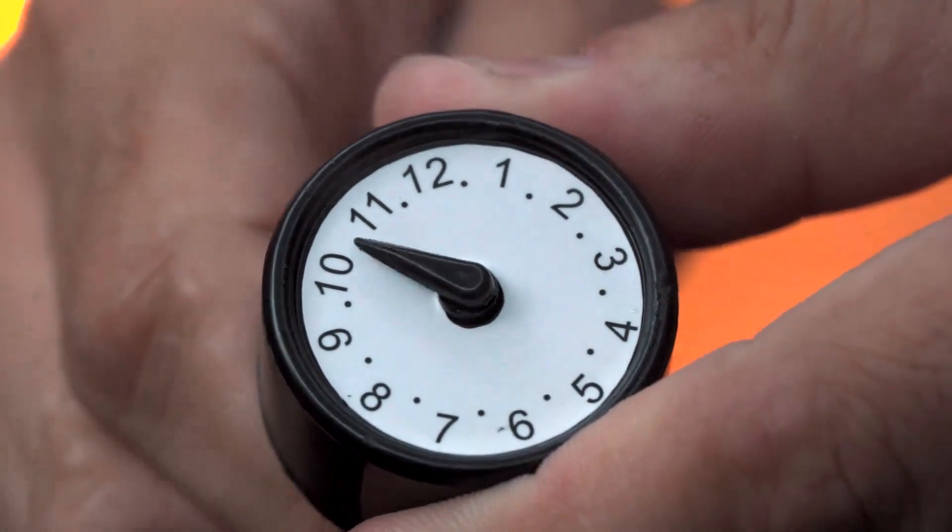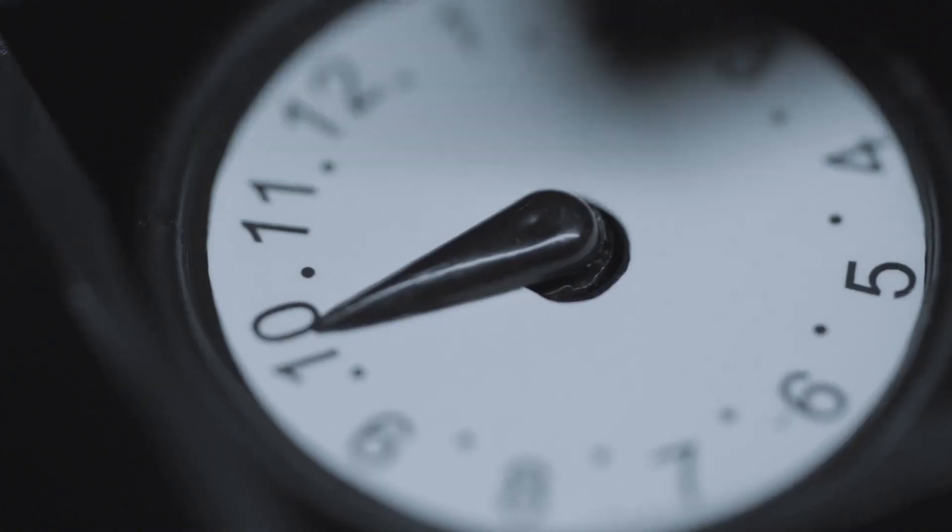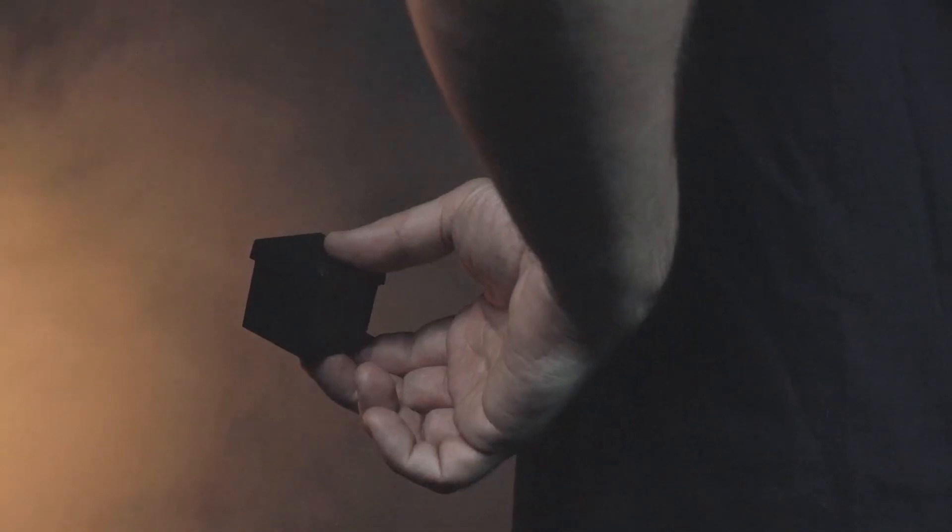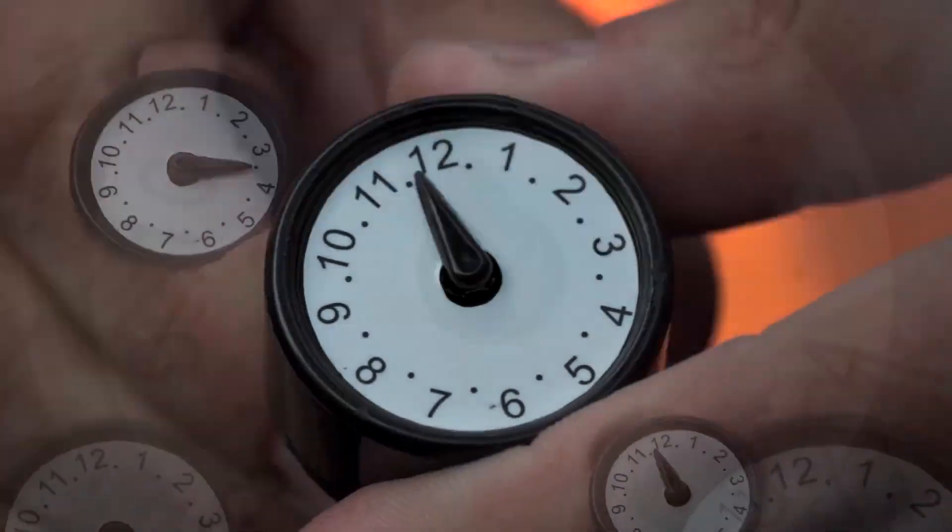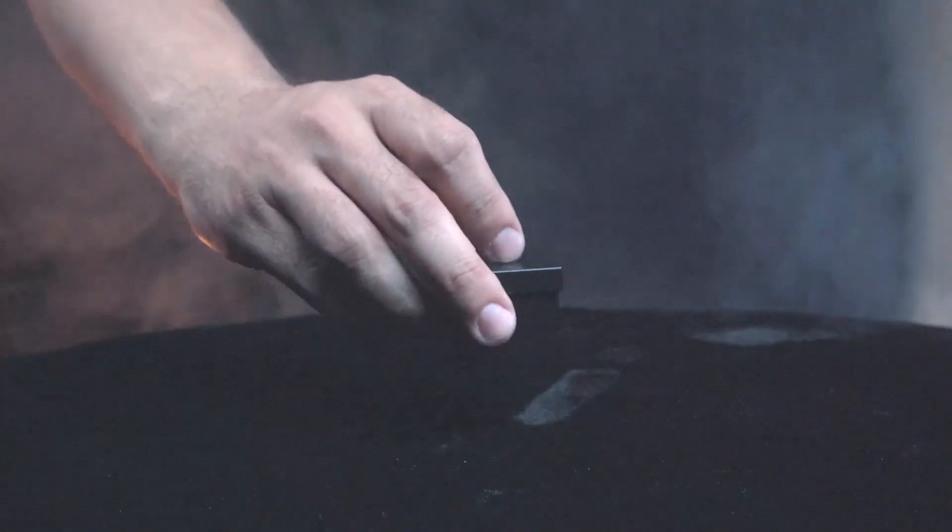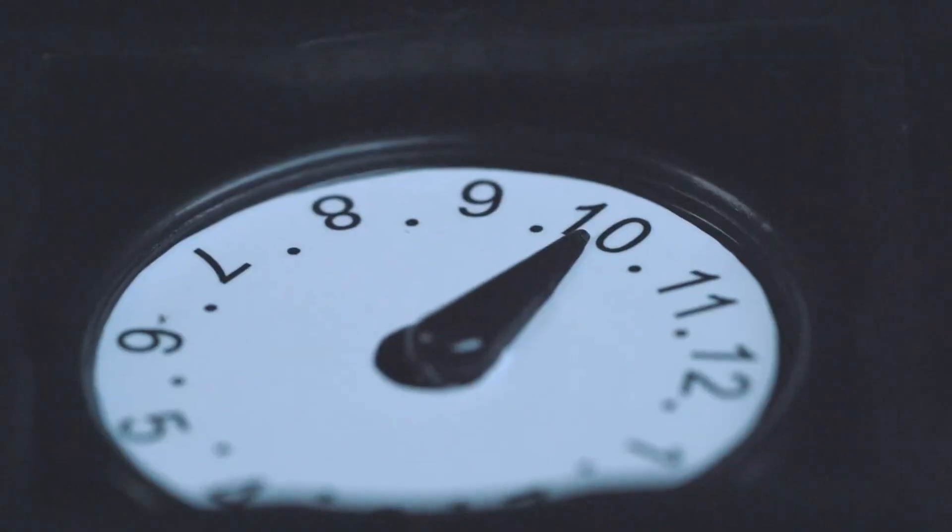With your back turned, your friend selects a random time on the clock and places it in the black box in front of them. After turning around, you tell your friends you are going to travel back in time. When you turn back around, you know what time your friend selected.